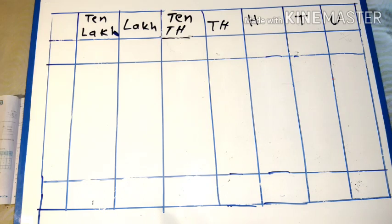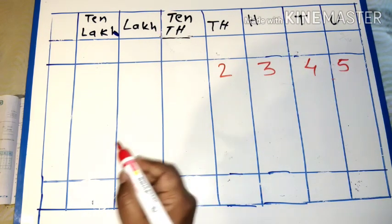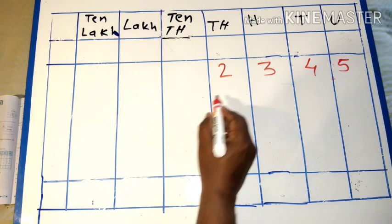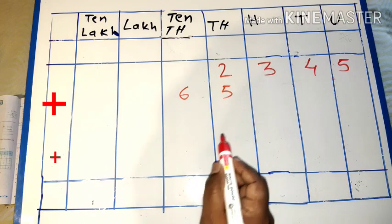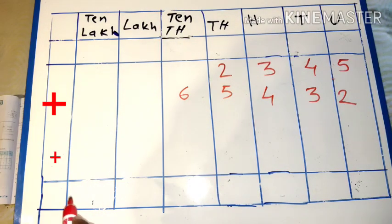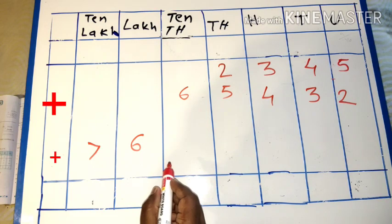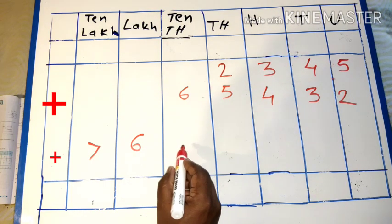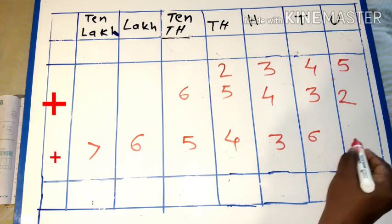So, the next example: two thousand three hundred forty-five plus sixty-five thousand plus sixty-five thousand forty-three hundred thirty-two and seventy-six lakh fifty-four thousand three hundred sixty-nine.